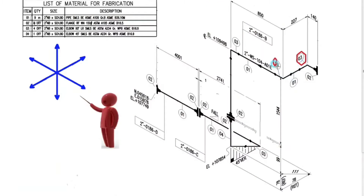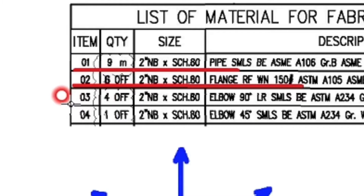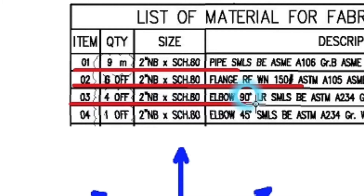These are details number 3. Let's look at the material list. Detail number 3: 4 pieces, 2 inch, schedule 80, elbow, 90 degree, long radius.